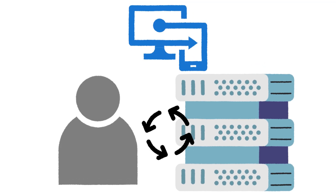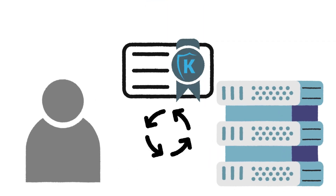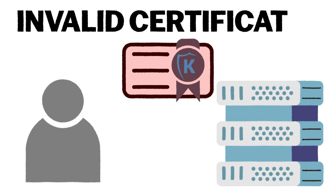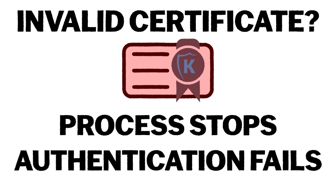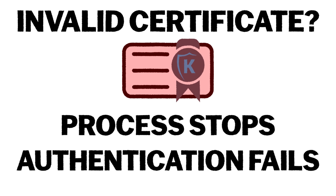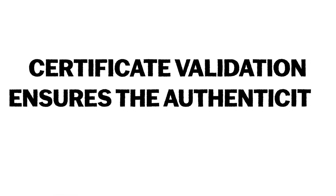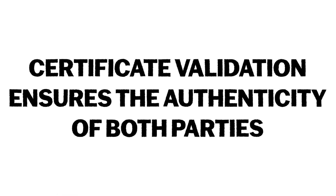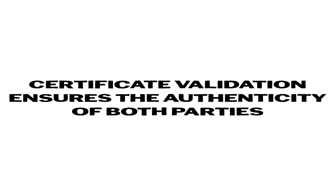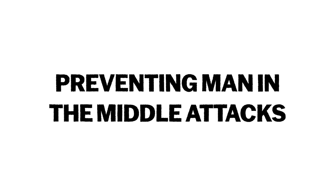Both the server and client validate each other's certificates against a list of trusted CAs. If either certificate is invalid or unsigned, the process stops here and authentication fails. Certificate validation ensures the authenticity of both parties and is essential for preventing man-in-the-middle attacks. No certificate, no access.